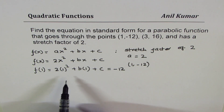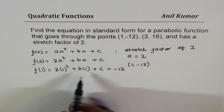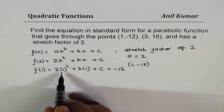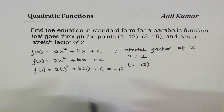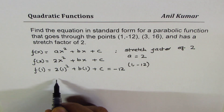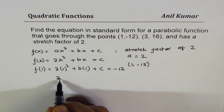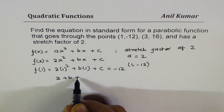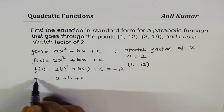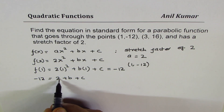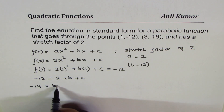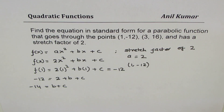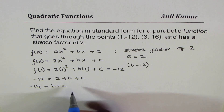We can simplify this. We get 2 + b + c = -12. Bringing the 2 to the right side, we get b + c = -14. We'll call this Equation 1.